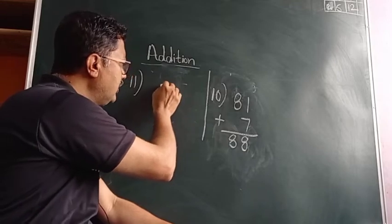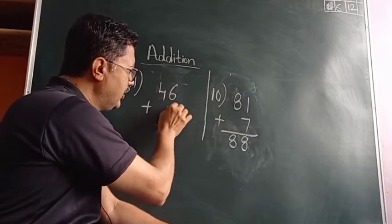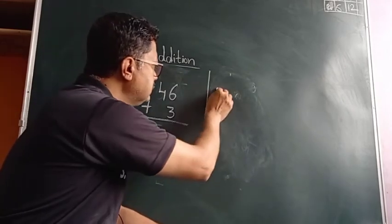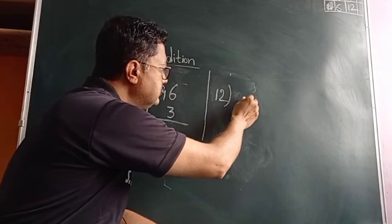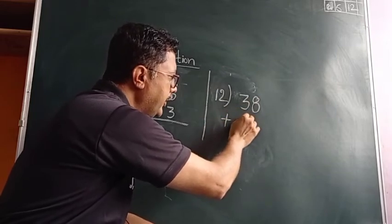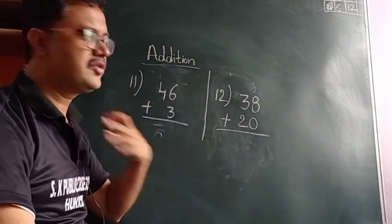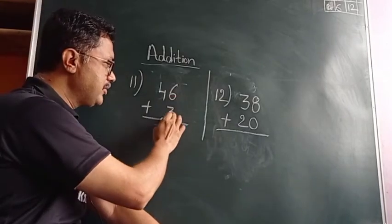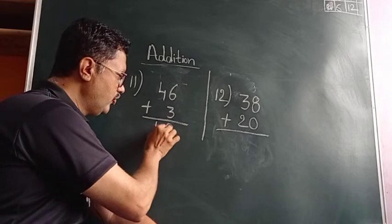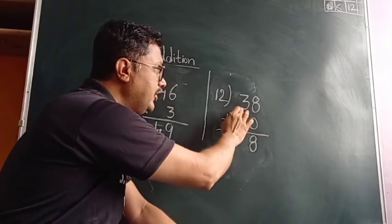Now solve this number. Six plus three is equal to nine, and four plus zero is equal to four. Now let us solve the next one: eight plus zero is equal to eight, and three plus two is equal to five.